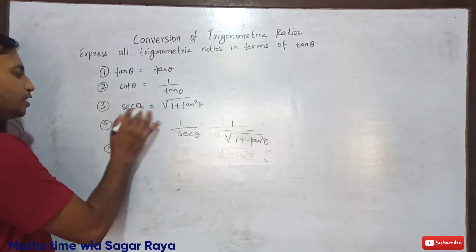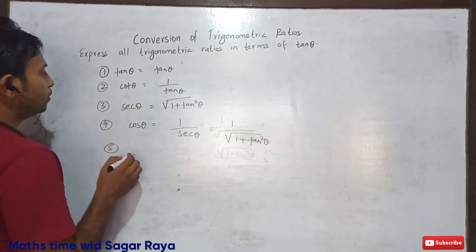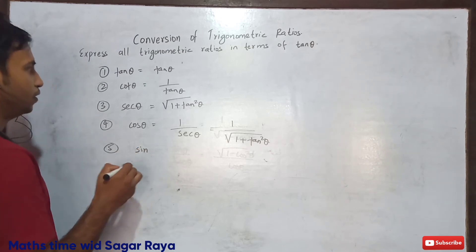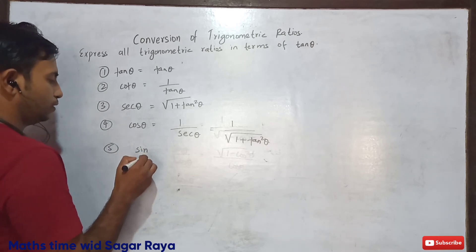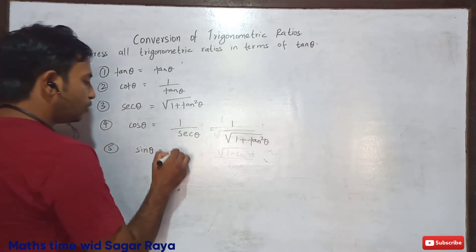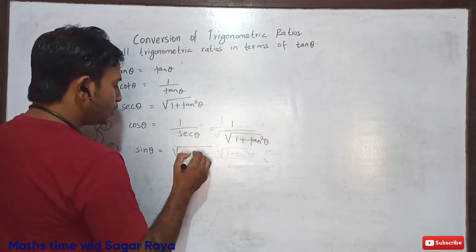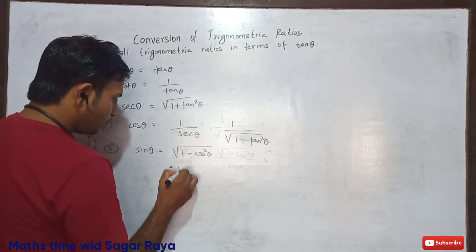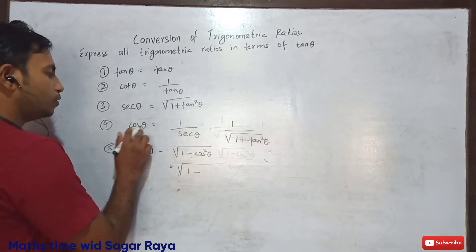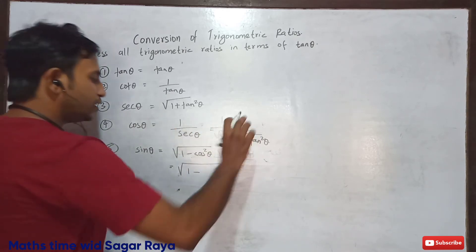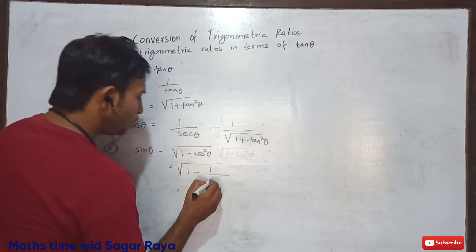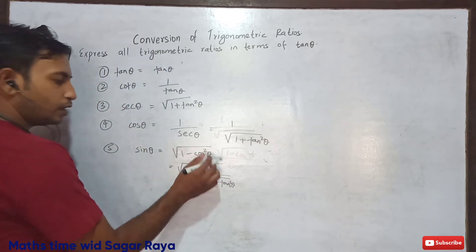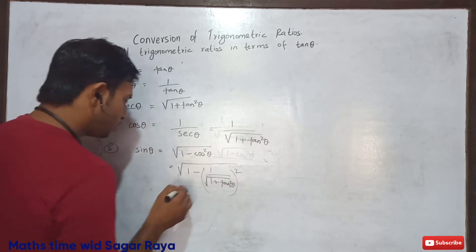Now we know cot theta, sec theta, and cos theta. We can find sin theta also. The formula for sin theta is root under 1 minus cos squared theta. So instead of cos theta, I may substitute 1 upon root under 1 plus tan squared theta. Since we have cos theta here, I have to square this value.